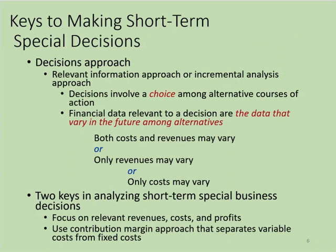Instead of looking at a company's entire income statement under each decision alternative, we will look just at how operating income would change or differ under each alternative. Using this approach, we leave out irrelevant information — the costs and revenues that will not differ between alternatives — and focus only on relevant information. Irrelevant information only clouds the picture and creates information overload, which is why we use the incremental analysis approach.